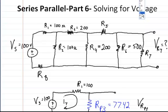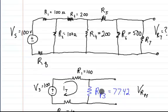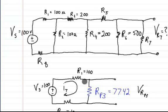In this video, we're going to solve for the voltage on R7. But in the previous video, we condensed this whole circuit down in order to solve for the resistance, the total resistance, and the total current in the circuit.